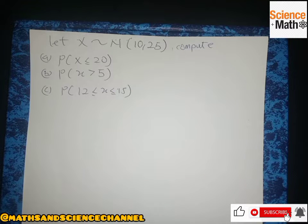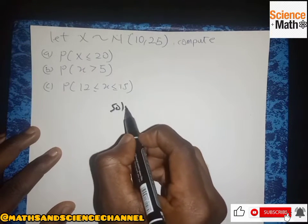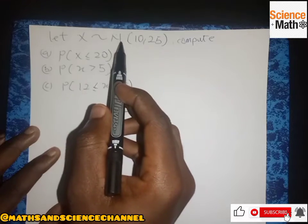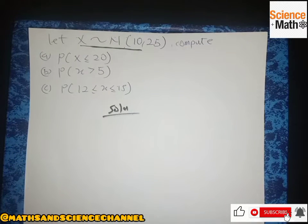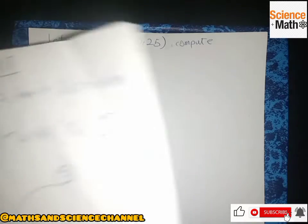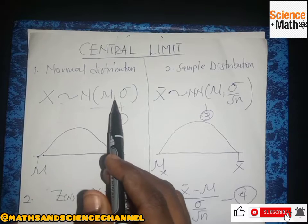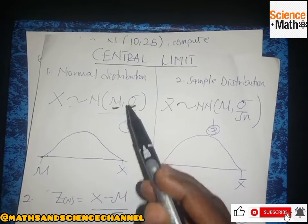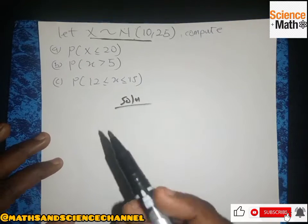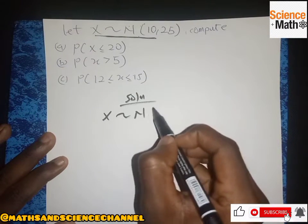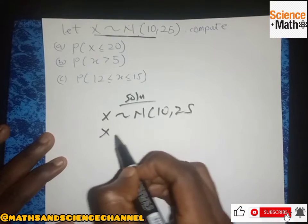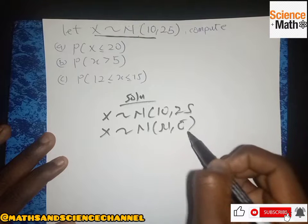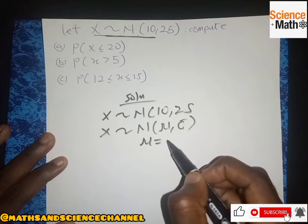Hello everyone, welcome once again to my channel. In this section we have a question that approximates to a normal distribution. So let's look at the solution. We have S approximately normal, from the central limit formulas we did previously. Comparing this to the normal distribution formula, we can find what mu is and what the standard deviation is. In this case we have mu equal to 10.